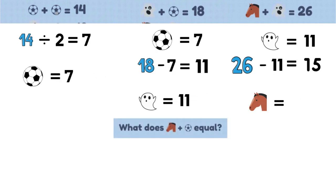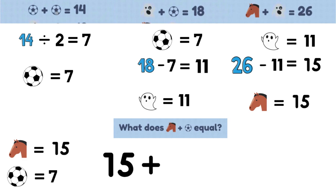The last step is answering the question. We know that the horse is 15 and a soccer ball is equal to 7. Now let's put in our numbers and add. 15 plus 7 is equal to 22.